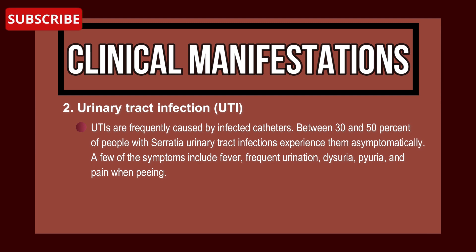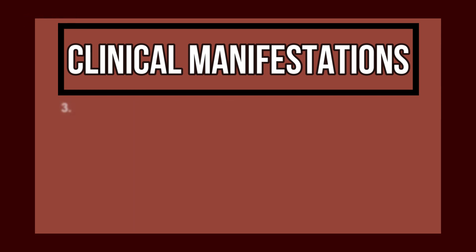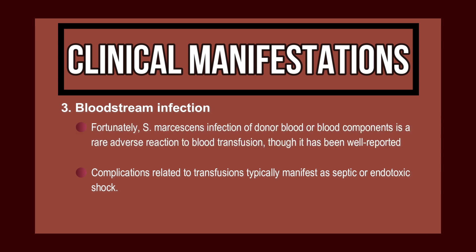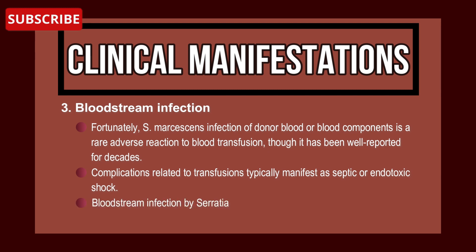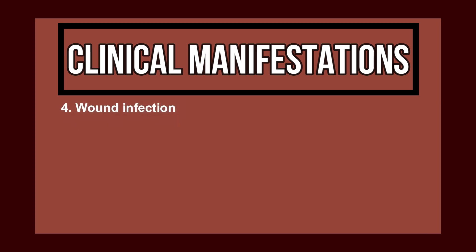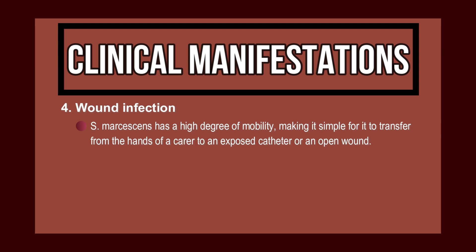Some symptoms of UTI include fever, frequent urination, dysuria, pyuria, and pain when urinating. Number three: bloodstream infection. Serratia marcescens infection of donor blood or blood components is a rare adverse reaction to blood transfusion, though well reported for decades. Complications typically manifest as septic or endotoxic shock, and bloodstream infection by Serratia can result in endocarditis, bacteremia, meningitis, osteomyelitis, and arthritis.